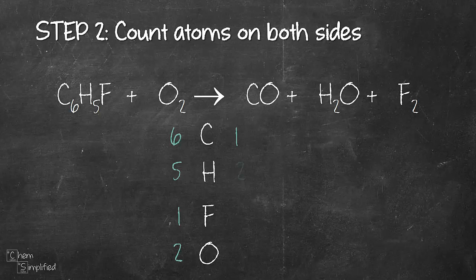On the right hand side, we have 1 carbon, 2 hydrogen, 2 fluorine, and 2 oxygen. Don't forget that we need to add the oxygen from CO term and the H2O term. We can see that carbon, hydrogen, and fluorine are not balanced and oxygen is balanced since we have two atoms on left and right hand side. So the next step will focus on getting the numbers for each atom to be the same on both sides.